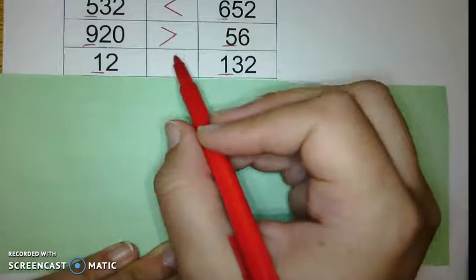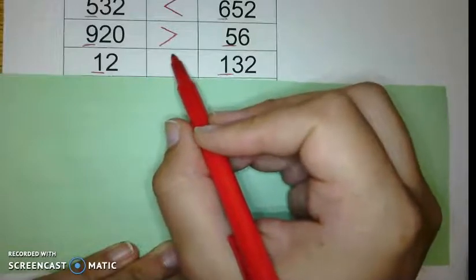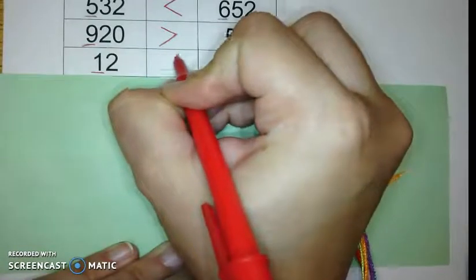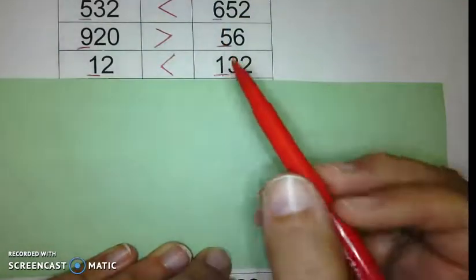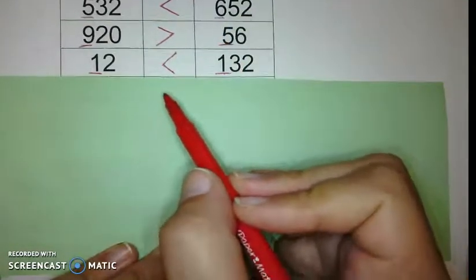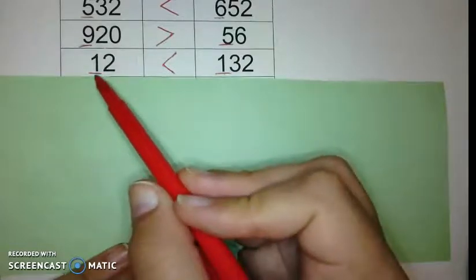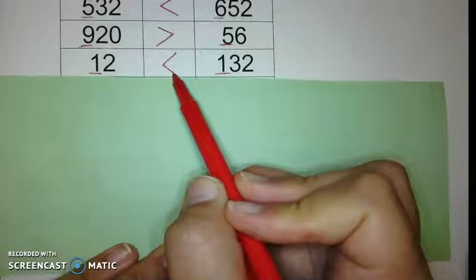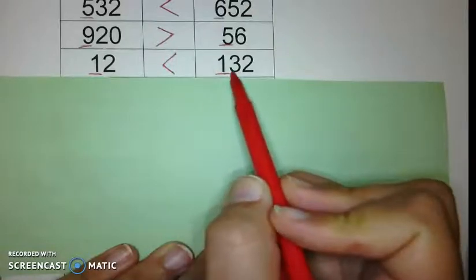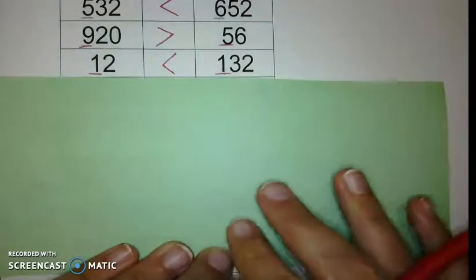Now which way should my little Pac-Man be open? He wants to eat the bigger number. Try and read this now using the correct term. 12 is less than 132. Amazing.